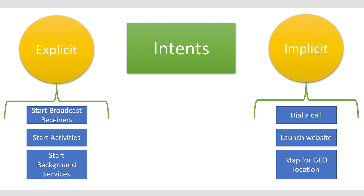An example of an explicit intent would be moving between different activities in the same application. An example of an implicit intent would be where we want to dial a number on our phone but don't want to build the capability of dialing a call in our own application, so we send out a message to the system asking if there is an application that can help dial a call.